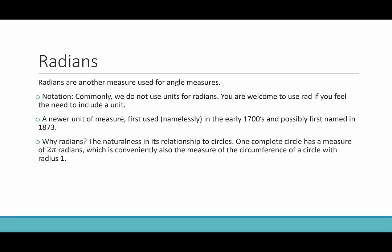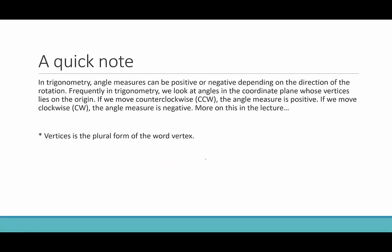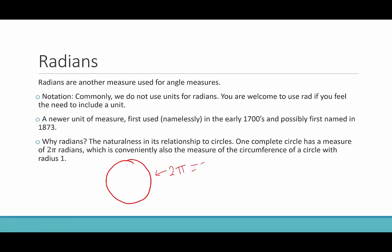So why radians? Well, the naturalness of its relationship to circles. So one complete circle is 2π radians. So if we have a circle, we would say that this angle measure, quote unquote, is 2π radians, right? And that's the same thing as 360 degrees. Why 2π? Well, because that's also the measure of the circumference. So it kind of makes sense.